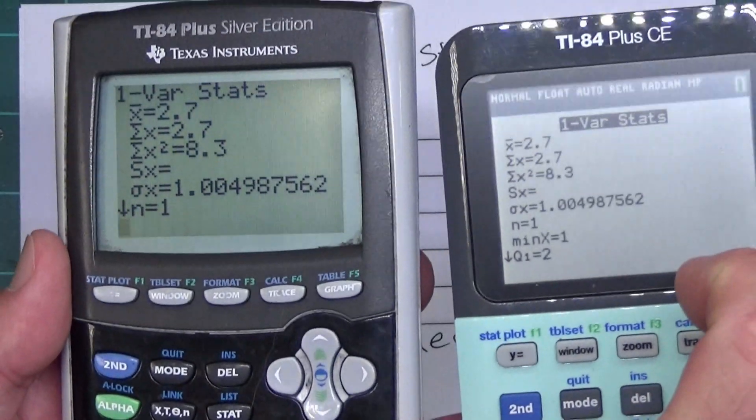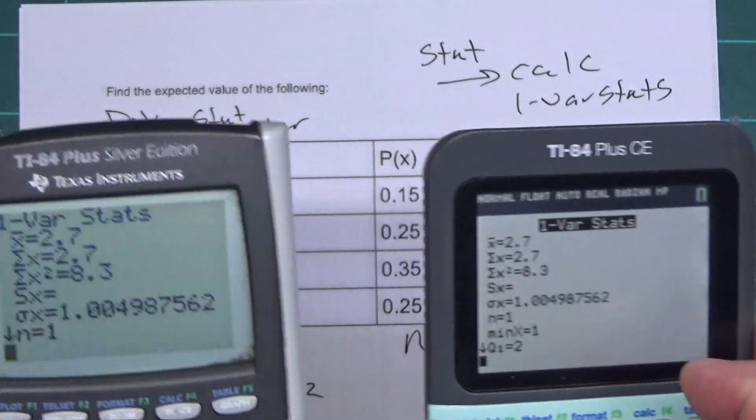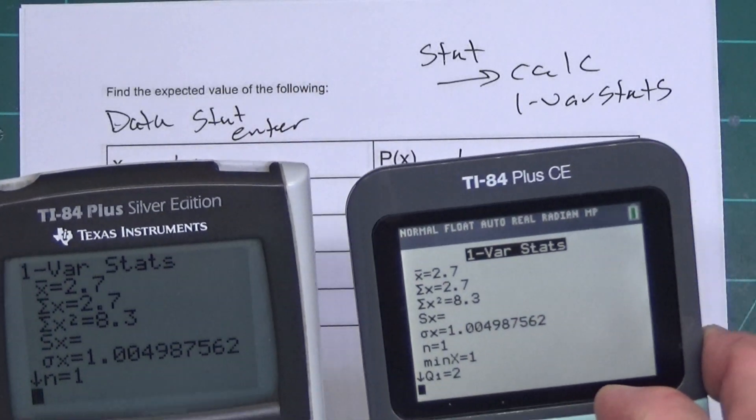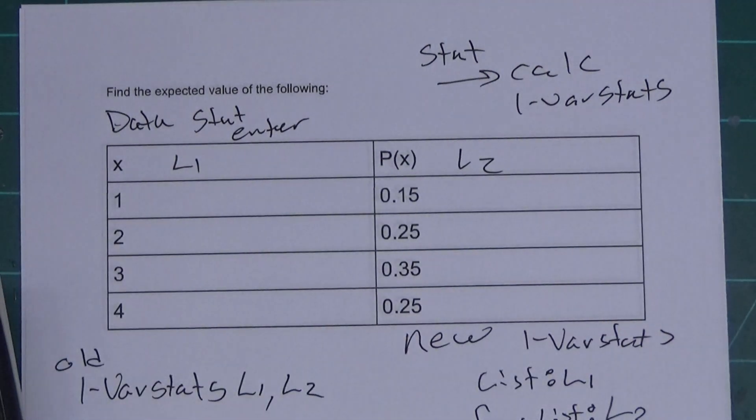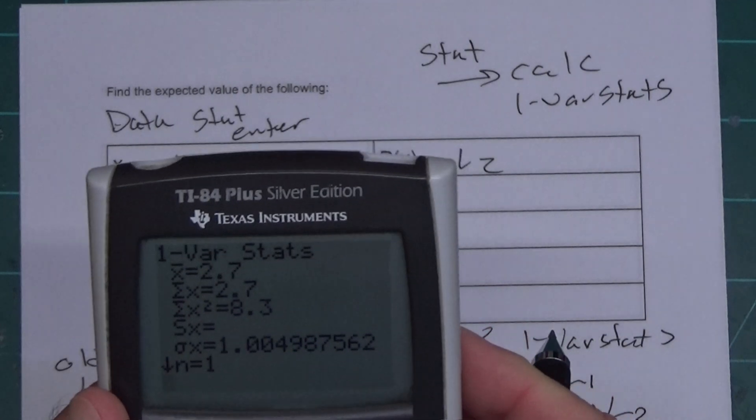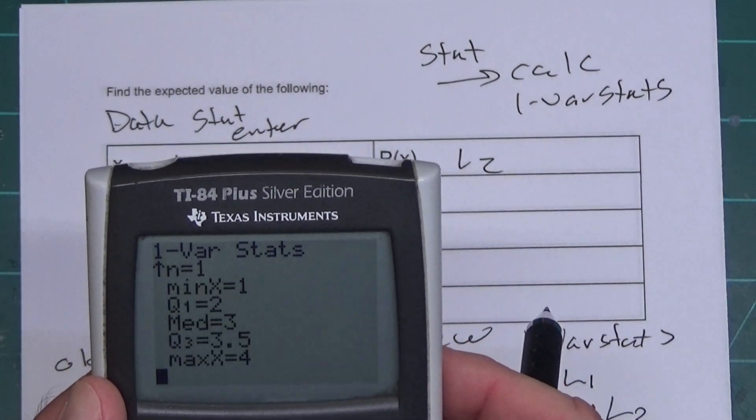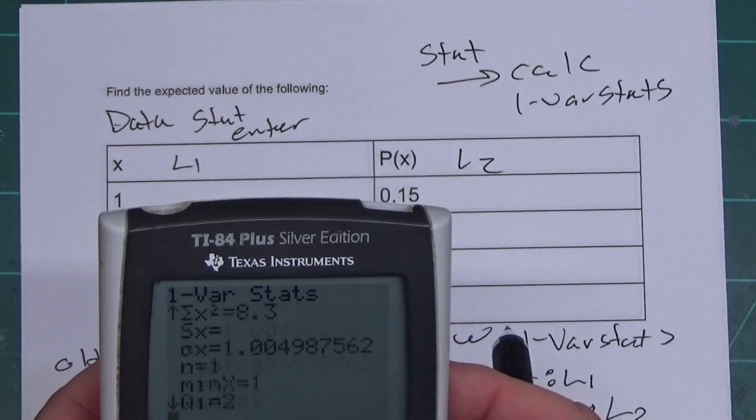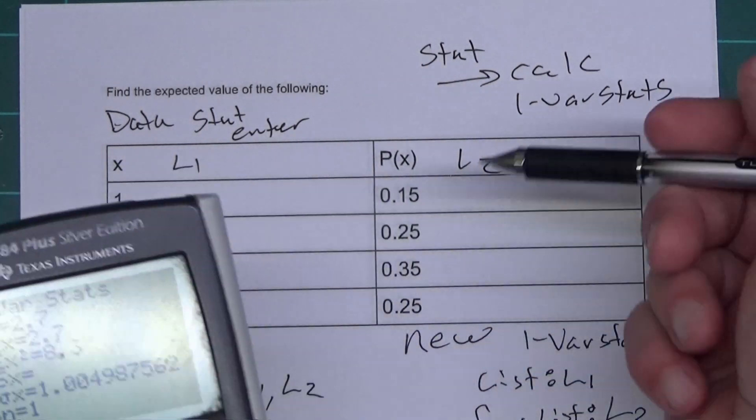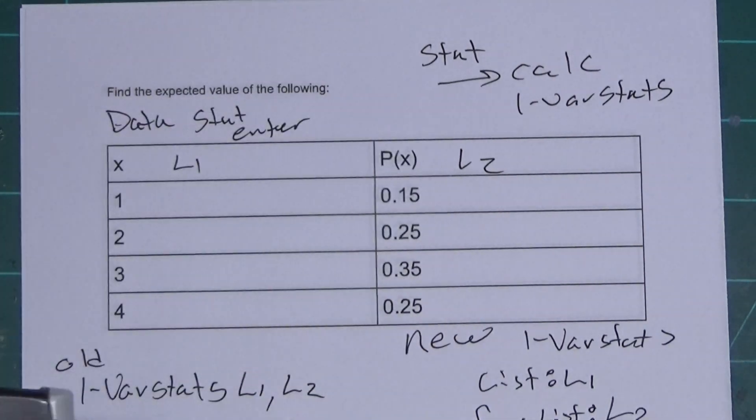You can tell they're both giving me the same things. This one's actually a little quicker than this one. Sometimes the new one's quicker. Sometimes the old one's quicker. It depends on what you're doing. Our expected value is X̄ is 2.7. The standard deviation is σx. If you scroll down, you have the 5-number summary, which would be pretty useless for this particular problem I'm working. But anyhow, our standard deviation is basically 1.